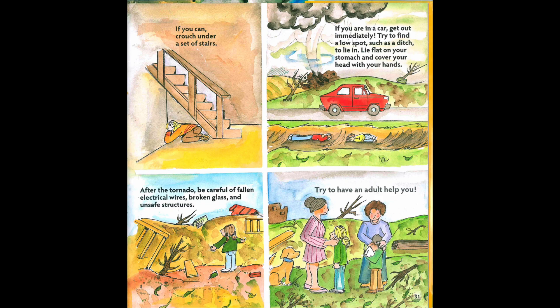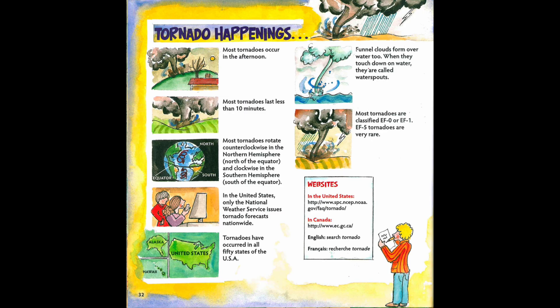Tornado happenings: Most tornadoes occur in the afternoon. Most tornadoes last less than 10 minutes. Most tornadoes rotate counterclockwise in the northern hemisphere and clockwise in the southern hemisphere. In the United States, only the National Weather Service issues tornado forecasts nationwide. Tornadoes have occurred in all 50 states of the USA. Funnel clouds form over water too — when they touch down on water, they are called waterspouts. Most tornadoes are classified EF0 or EF1. EF5 tornadoes are very rare.